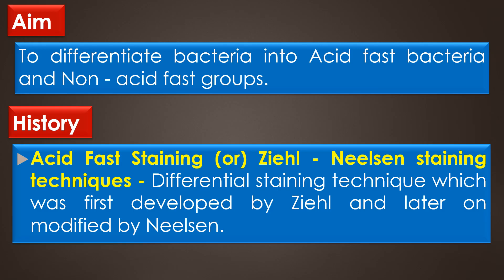The aim of the acid-fast staining is to differentiate the bacteria into acid-fast bacteria, particularly the species of mycobacteria, and non-acid-fast groups. According to history, the acid-fast staining is the differential staining technique, which was first developed by Ziehl and later on modified by Nielsen. This method is also called the Ziehl-Nielsen staining technique.